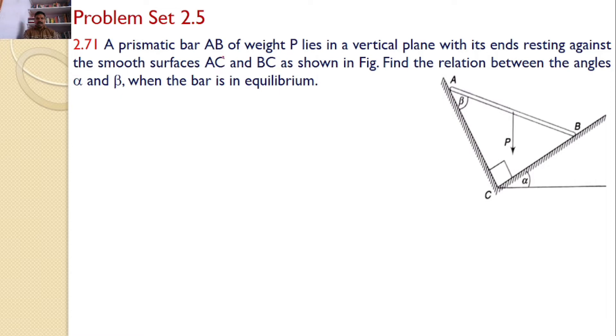A prismatic bar AB of weight P lies in a vertical plane with its ends resting against the smooth surfaces AC and BC as shown in the figure. Find the relation between the angles alpha and beta when the bar is in equilibrium.